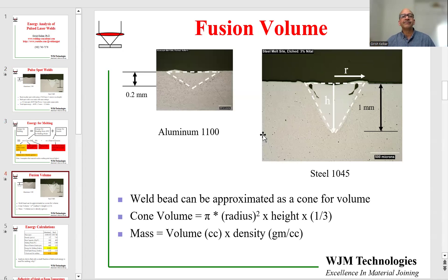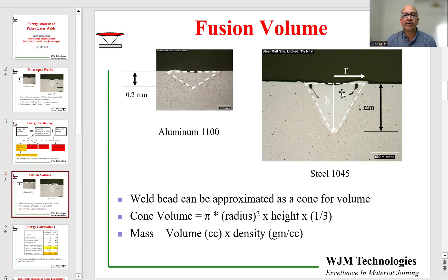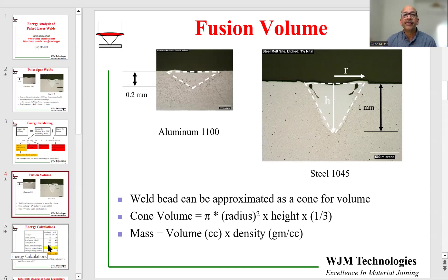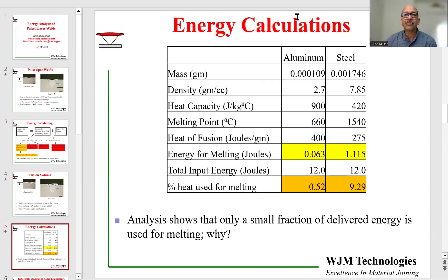The volume of fusion metal can be calculated from the cross sections. I have approximated the cross section to be a triangle, both for aluminum and steel, measured the base and height based on the scale on these pictures. The volume of the cone which forms for fusion would be pi times the radius squared times the height divided by three. Once we get the volume, we multiply by density to get the mass of the molten metal, and then put it all into an Excel spreadsheet and do the math.